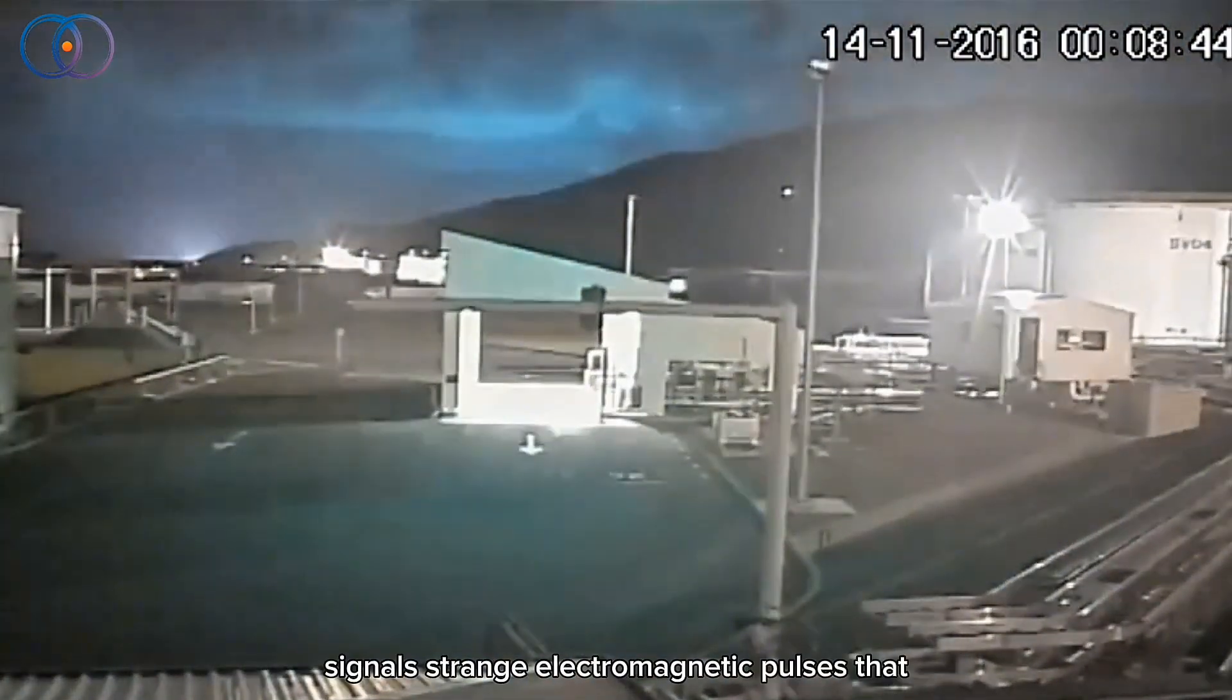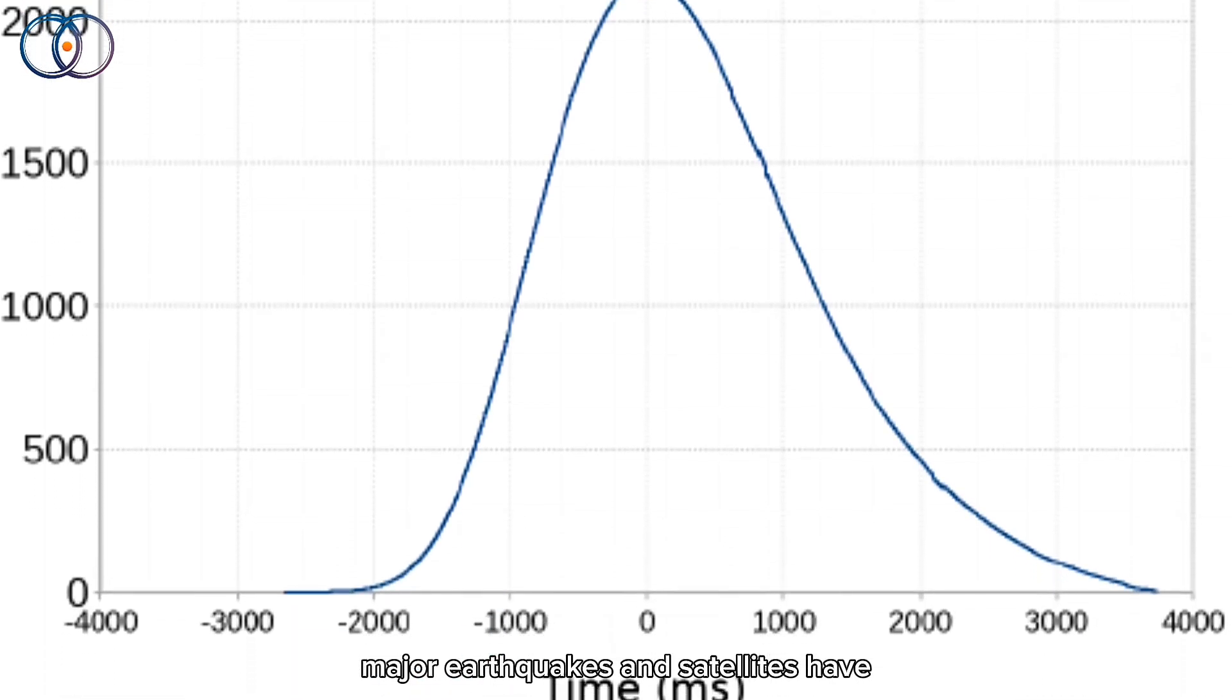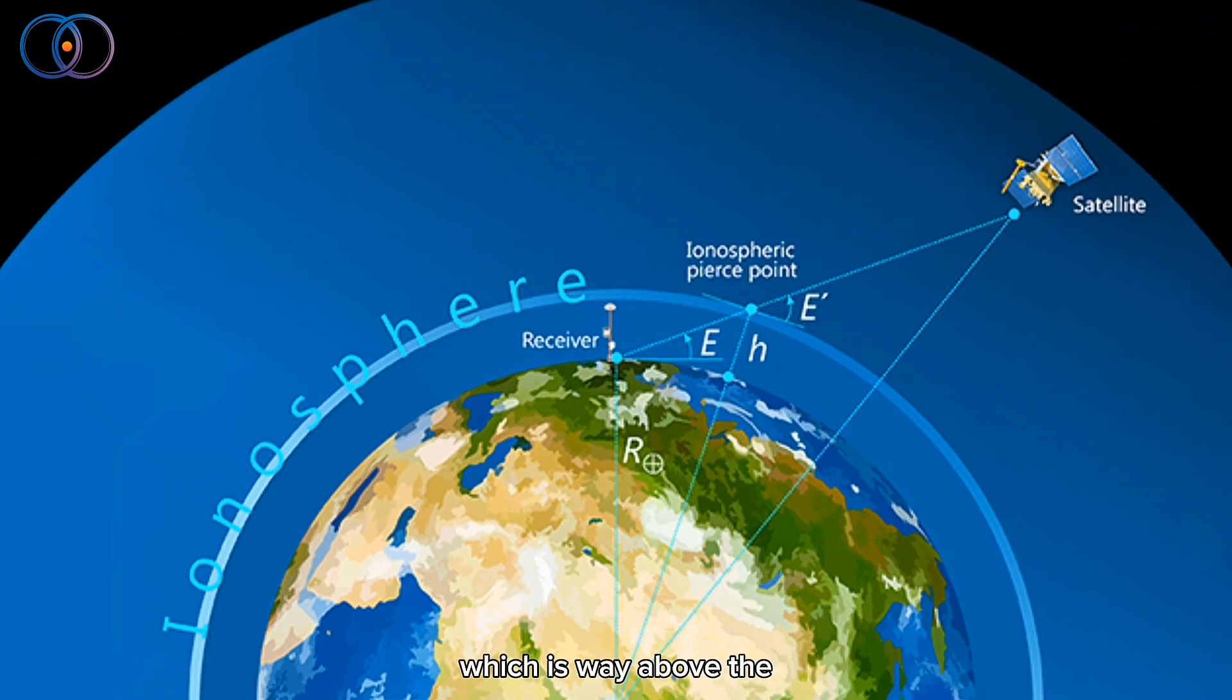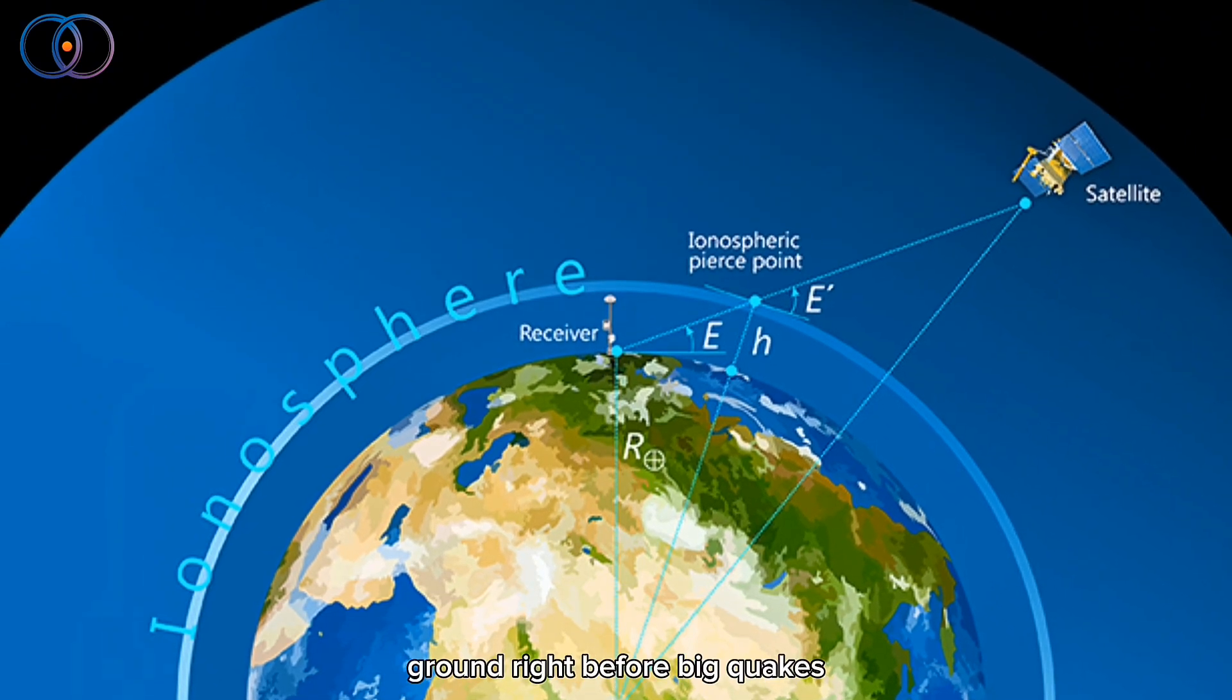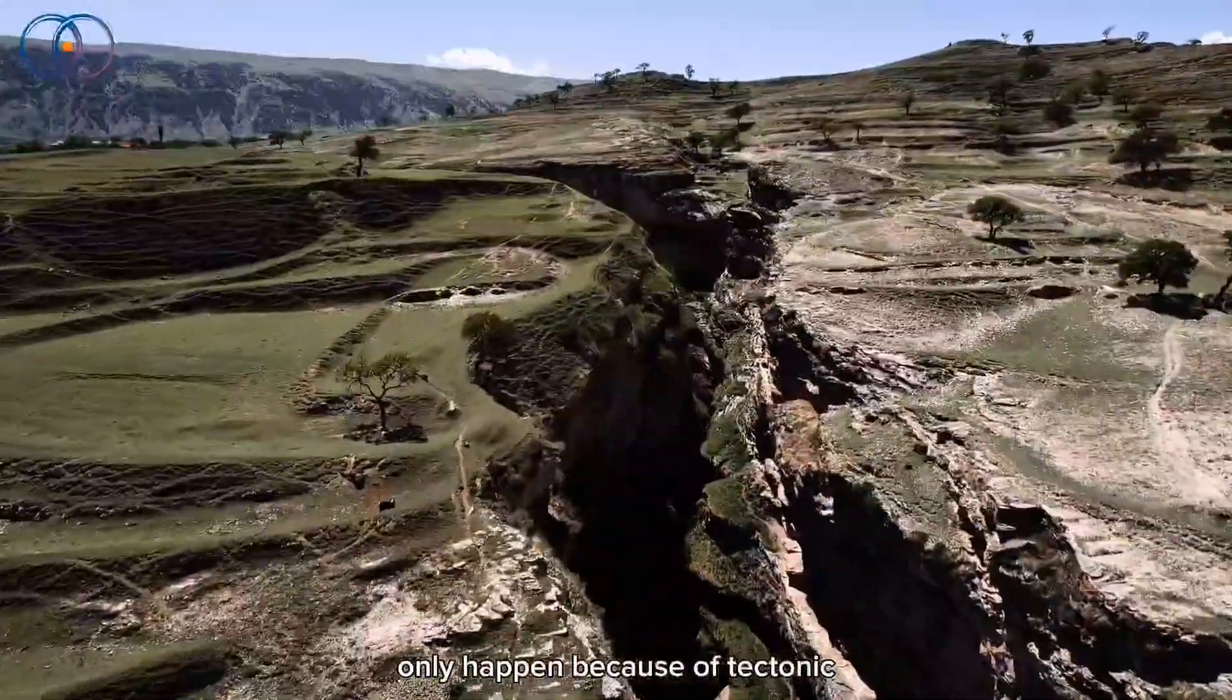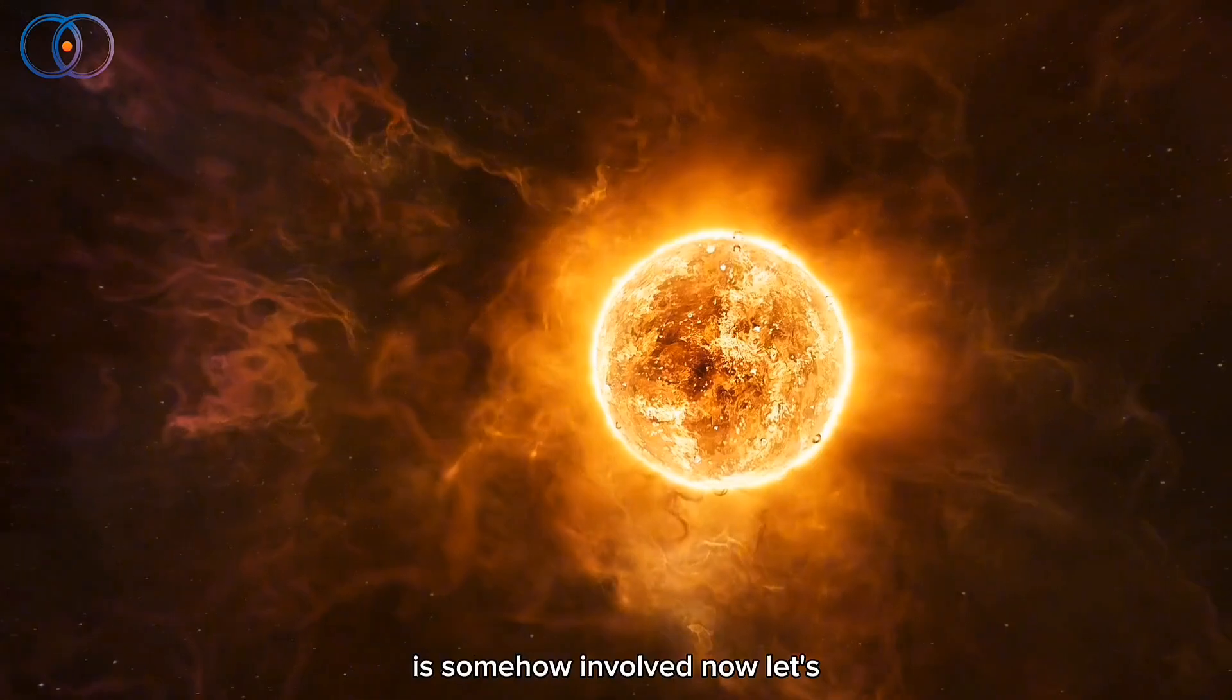There are even radio signals, strange electromagnetic pulses that scientists have picked up before major earthquakes. And satellites have seen changes in the ionosphere, which is way above the ground, right before big quakes. None of this fits the old school idea that earthquakes only happen because of tectonic plates moving. But it does make sense if the sun is somehow involved.